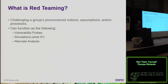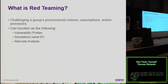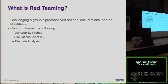So what is red teaming? The classical definition is challenging a group's preconceived notions, assumptions, and processes — looking at what some group of folks are doing and asking, are you doing the right thing, and why? These generally function as three things: vulnerability probes, simulation exercises, and alternative analysis. Most of what we do in InfoSec ends up being around vulnerability probes, but there's also simulation — like war gaming — and alternate analysis, looking at a body of information to see if the first folks came to the right conclusions.